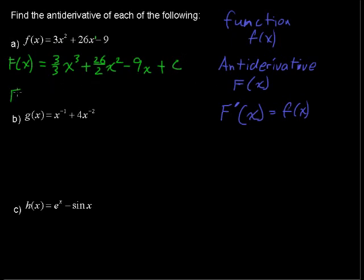Now I'll just clean this up a little bit. Capital F of x equals x to the third plus 13x squared minus 9x plus c. That's the answer on the first one.